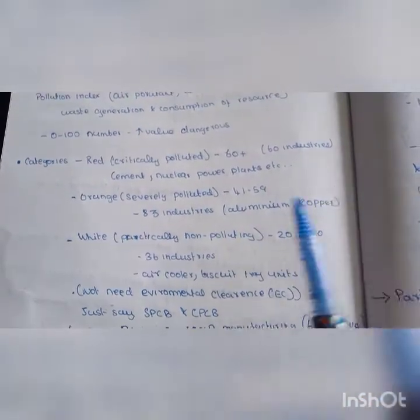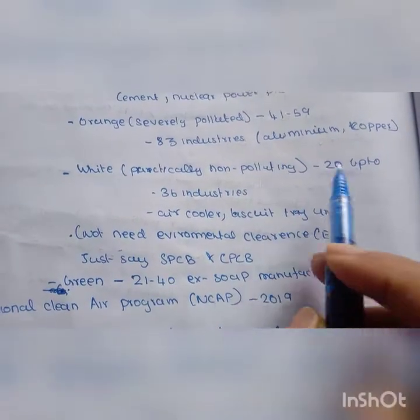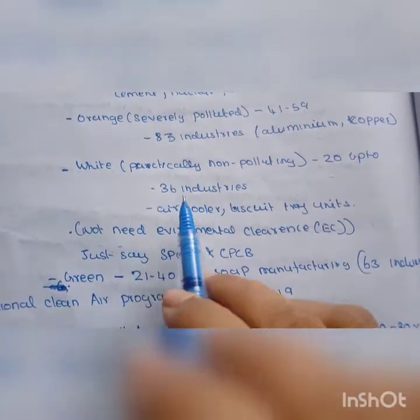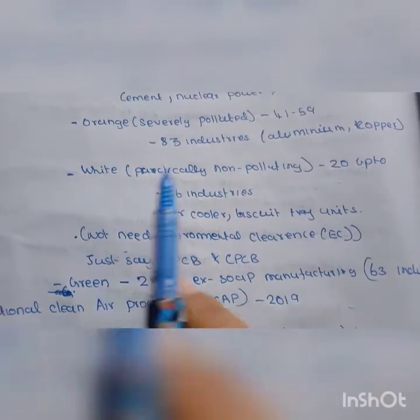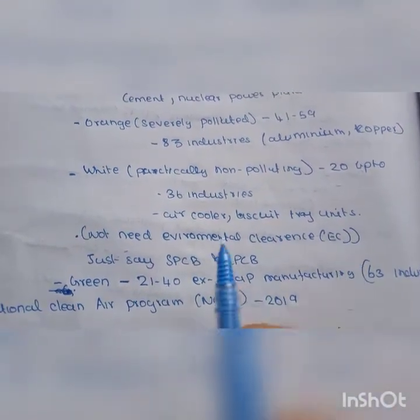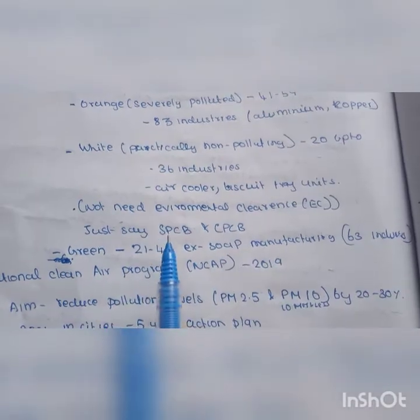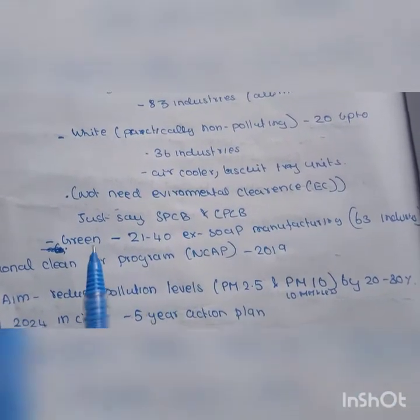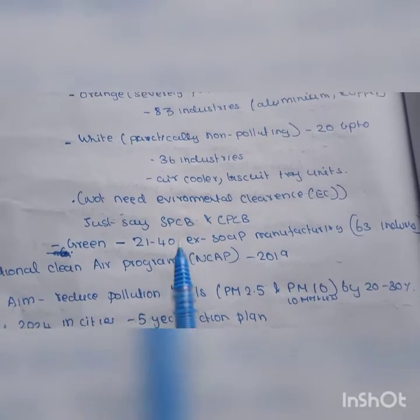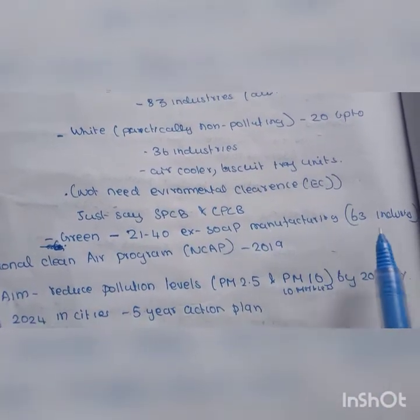White is non-polluting white industries. There are 36 industries like air cooler manufacturing and biscuit tray units. White industries don't need environment clearance, just inform the State Control Board and Central Pollution Control Board. Green industries are 21 to 40, for example soap manufacturing. There are 63 industries.